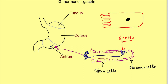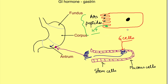It is important to know that these G cells have certain receptors on their surface — receptors for amino acids, receptors for peptides, and also receptors for H+ ions. So these chemicals can act on the G cells and affect their function.